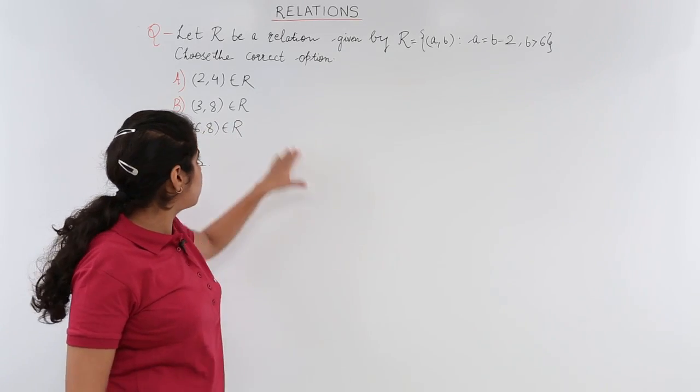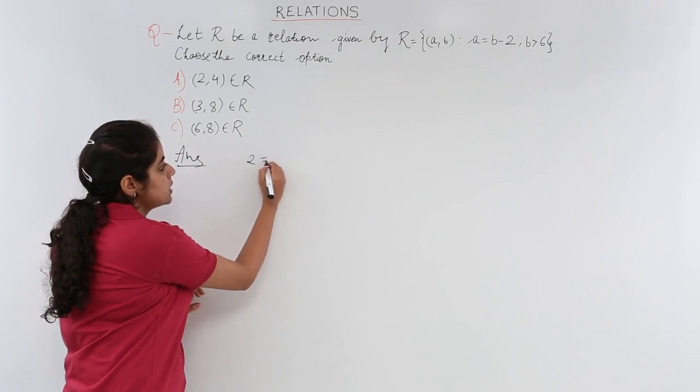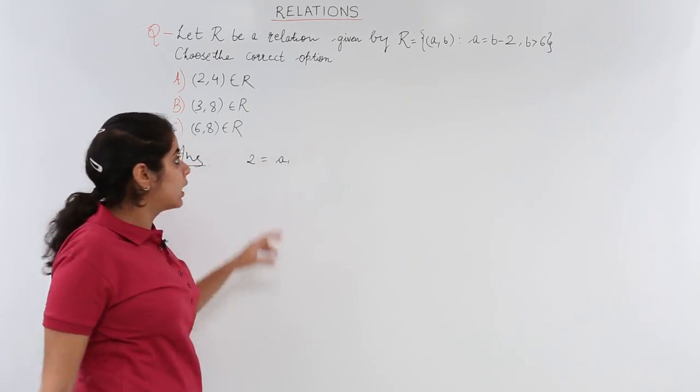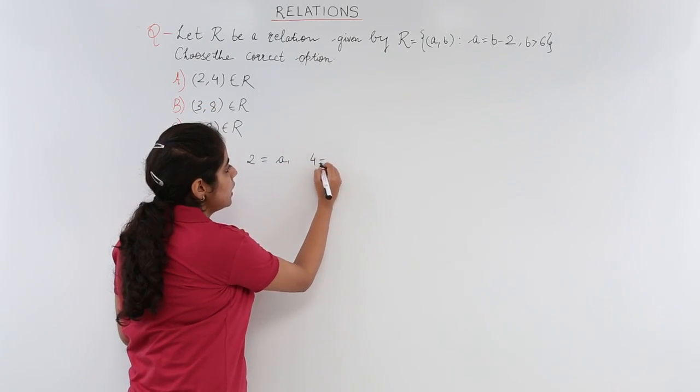Let's see the first option: (2, 4) belongs to R. That means 2 is a and 4 is b.